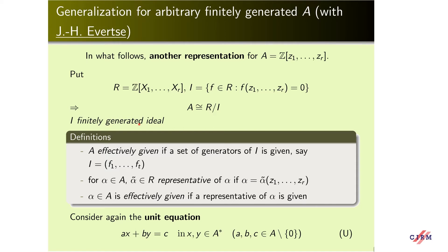A generalization for the arbitrary finitely generated case was made by Evertse. Another representation for A will be given. We put R = Z[X₁,...,X_r], the polynomial ring. Consider the ideal I of this polynomial ring for which A is isomorphic to R divided by I, and I is finitely generated. By definition, in this representation, we say that A is effectively given if a set of generators of I is given, say F₁,...,F_t.